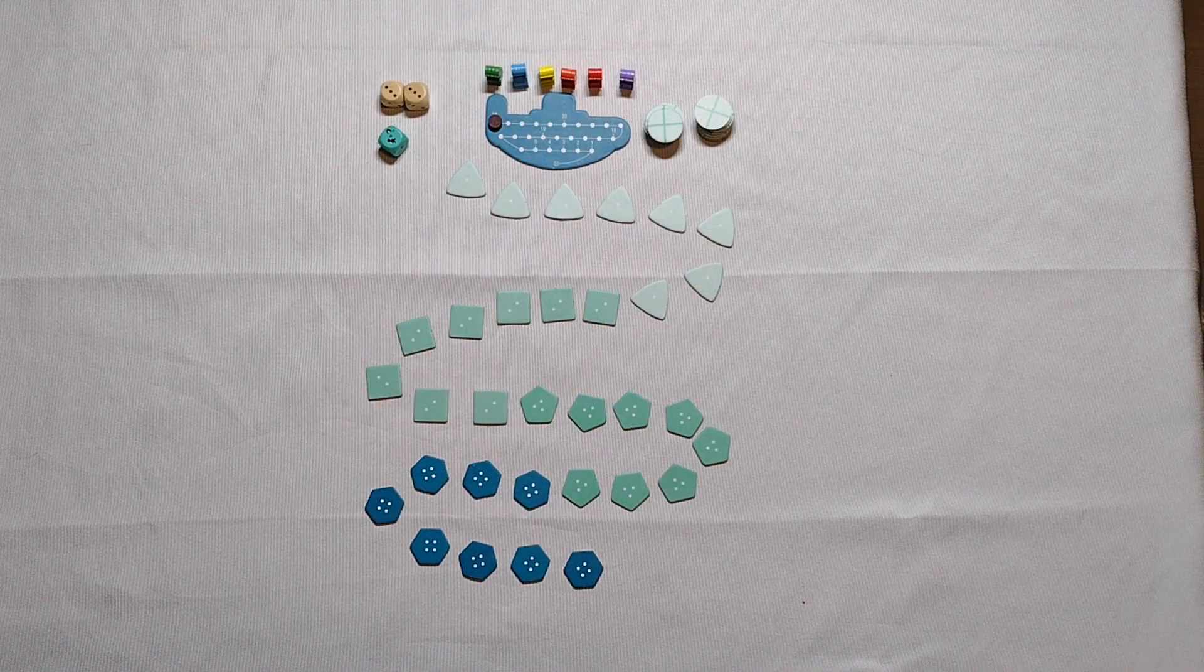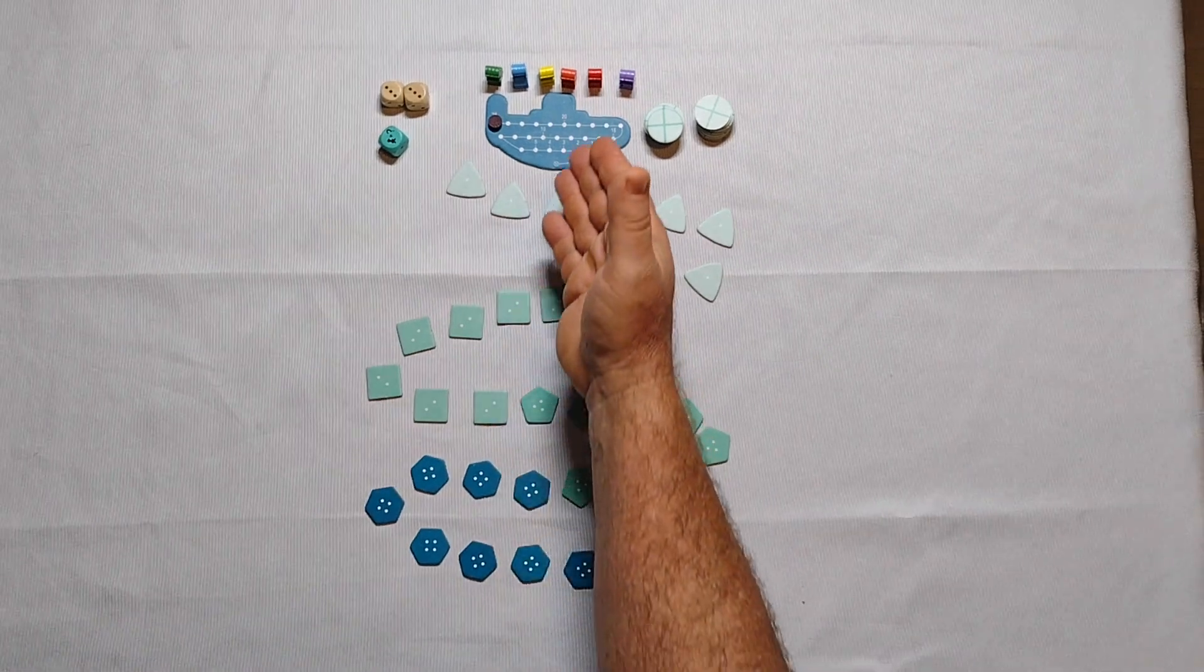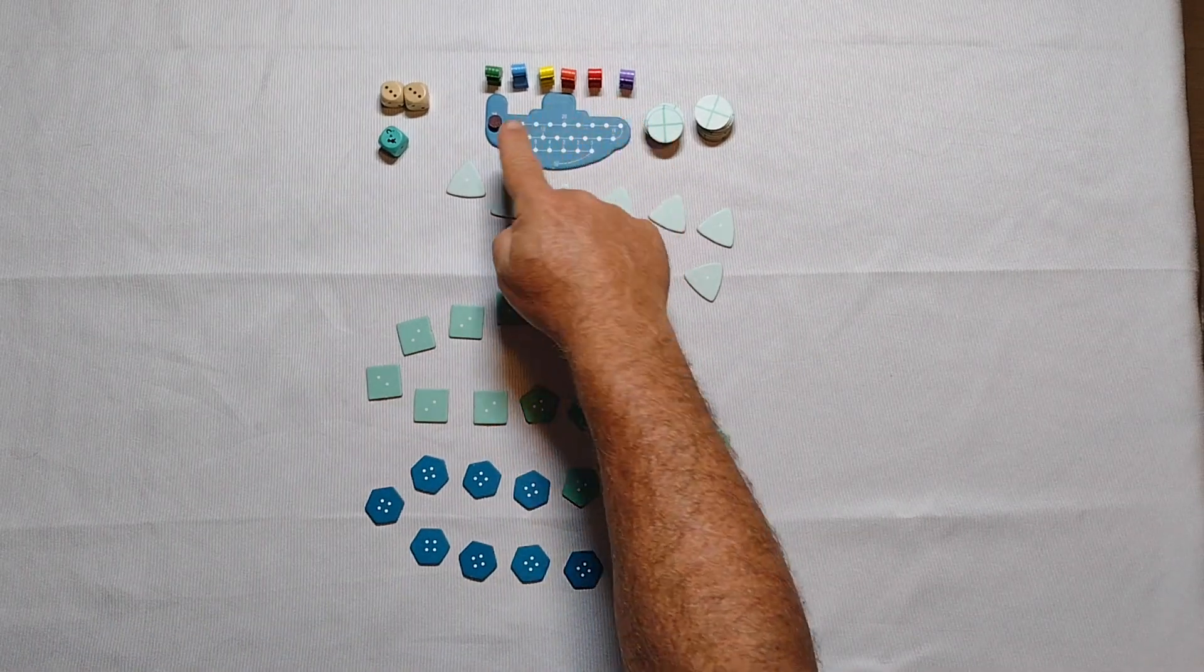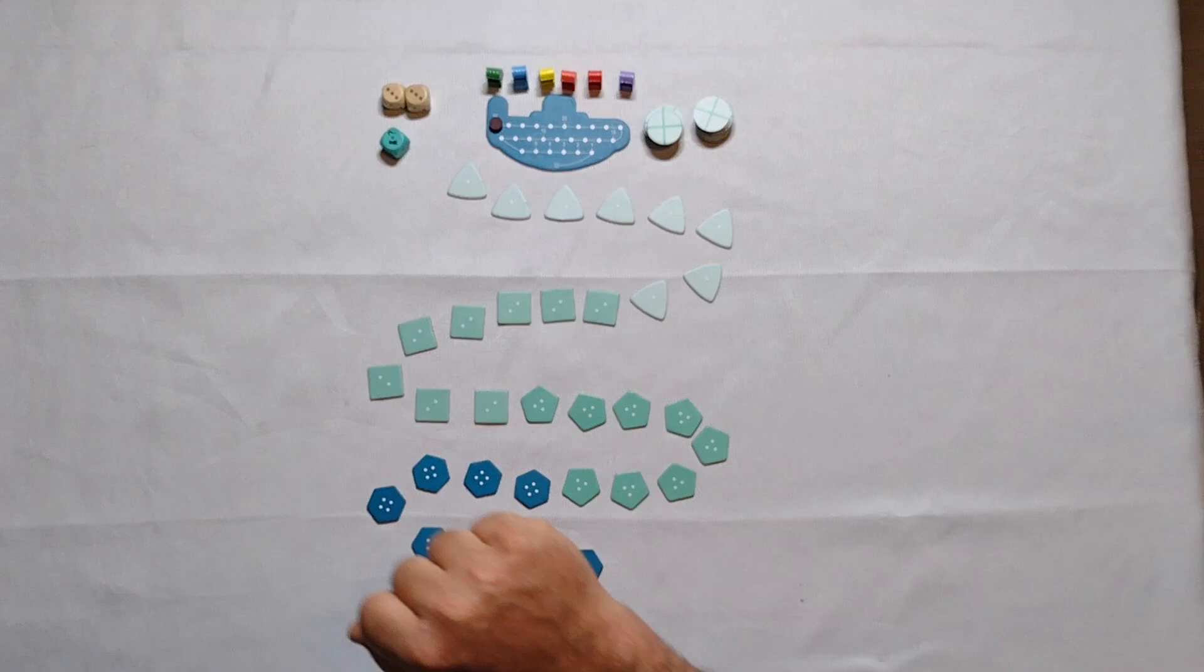Setup is pretty straightforward. Start by putting the ship at the top of your table and setting the air marker on the 25 space.